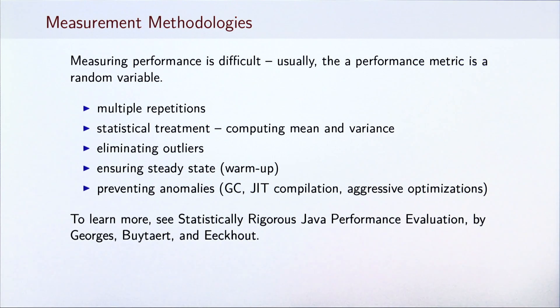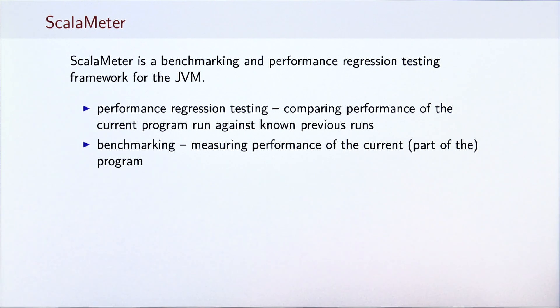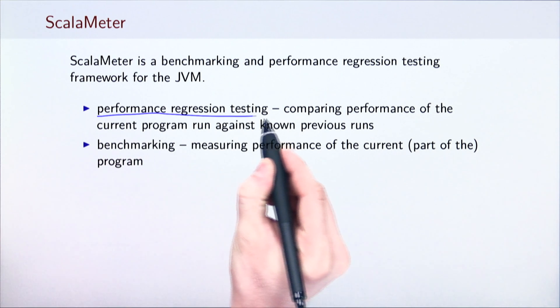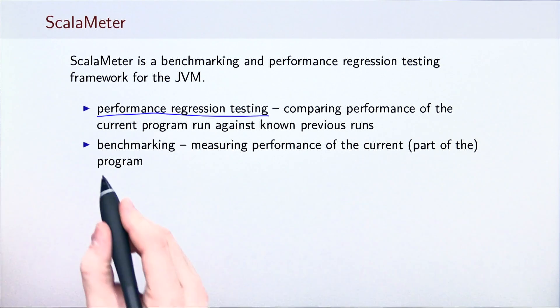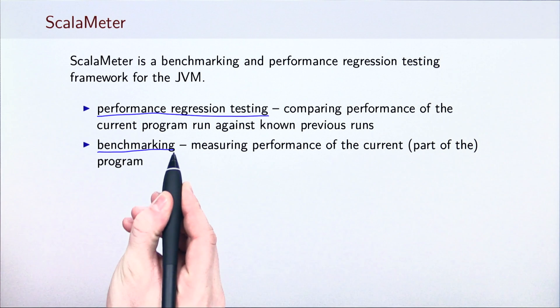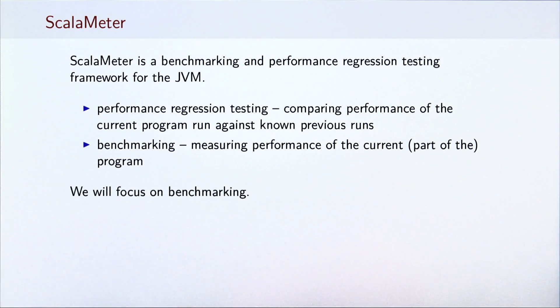If you are interested in learning more about accurate performance measurement, we recommend that you read the article Statistically Rigorous Java Performance Evaluation. Having convinced ourselves that measuring performance is a complex task, we turned to an existing tool to do the job for us. Scalameter is a benchmarking and performance regression testing framework for the JVM. Here we differentiate between performance regression testing, comparing the performance of the program run against known previous runs, and benchmarking, measuring performance of the current program. In this course, we will focus on the benchmarking features of the Scalameter framework.